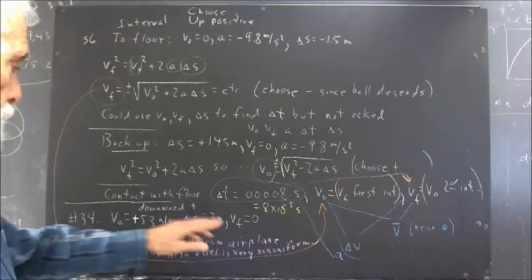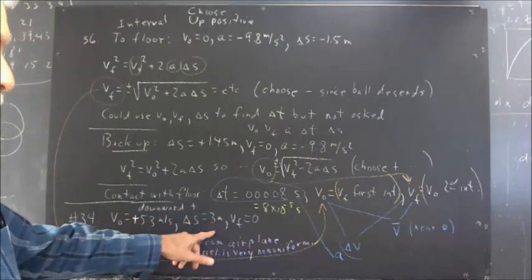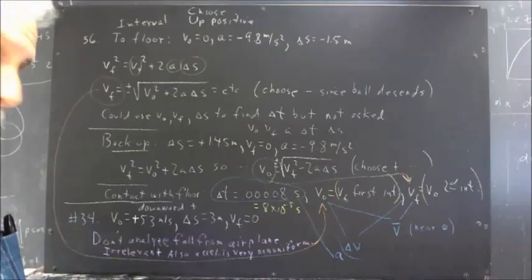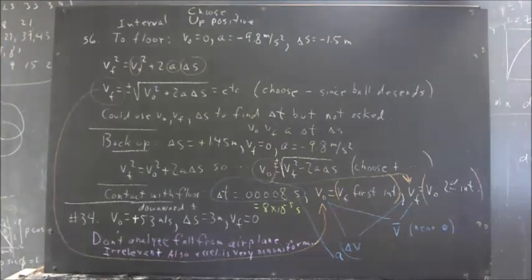So those are the three things you know, and we know initial and final velocities, so we can find average velocity, we can find change in velocity. We know delta S, which we put together with the average velocity to get the time interval. We could then divide the change in velocity by the time interval and get the acceleration.